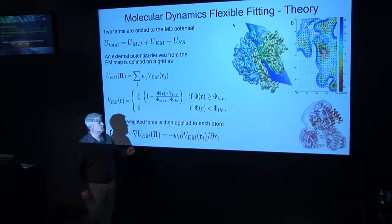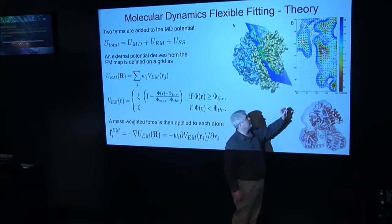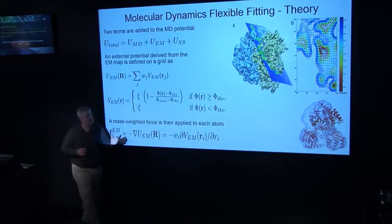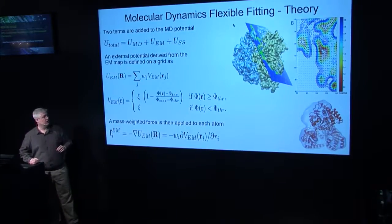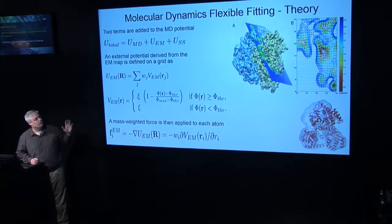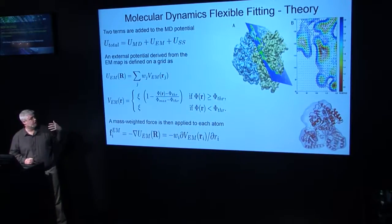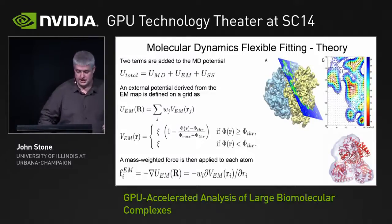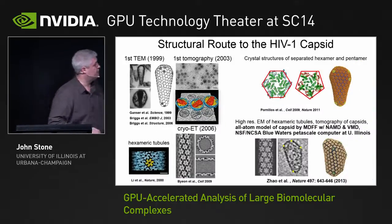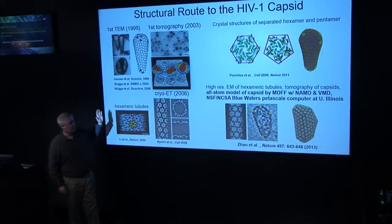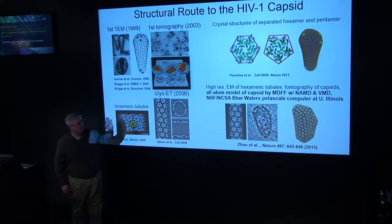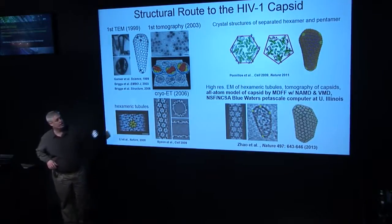The simulation takes the cryo-electron density map and uses it to create a force field that pulls on atoms in the molecular dynamics structure, causing them to fall into the same conformation as the real physiological object. The atoms still obey all the laws of physics via the molecular dynamics force field, but the experimental imaging data corrects the all-atom model. Using this technique combined with a petascale computer simulation, my team at the University of Illinois, directed by Klaus Schulten, solved the all-atom structure of the HIV-1 virus capsid.